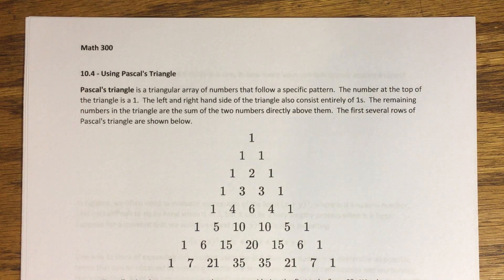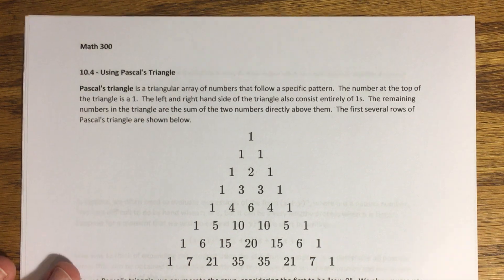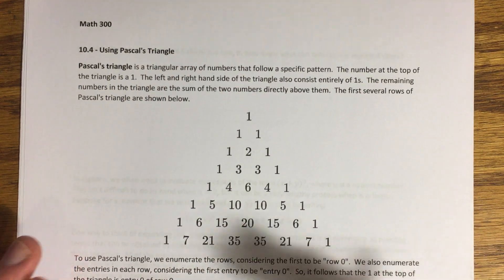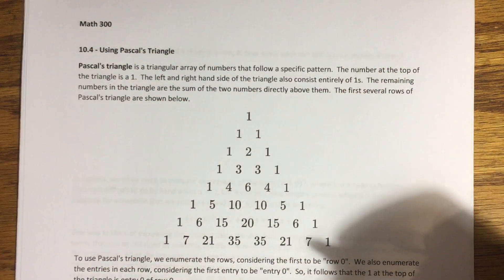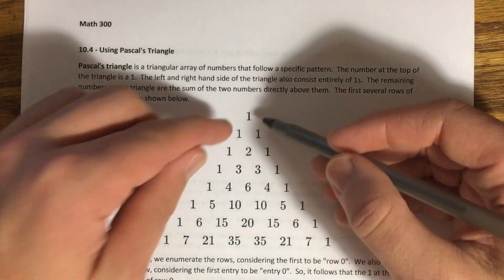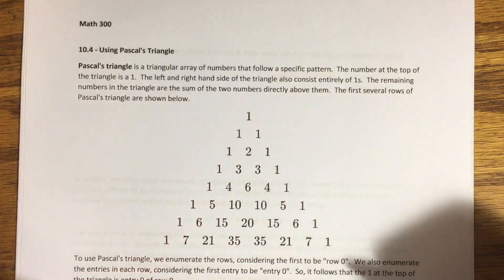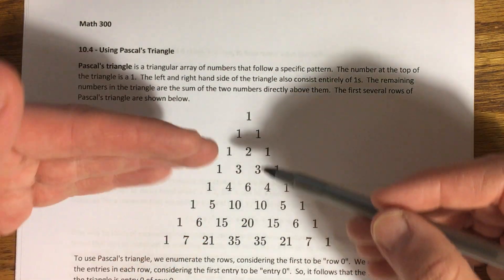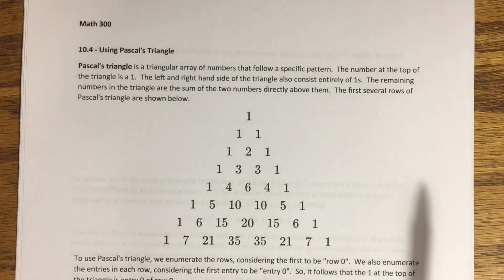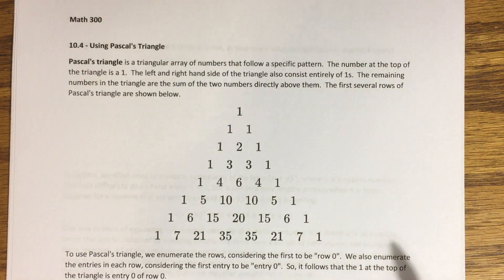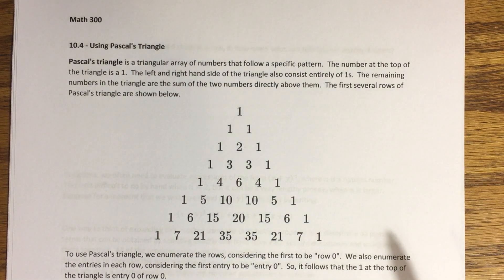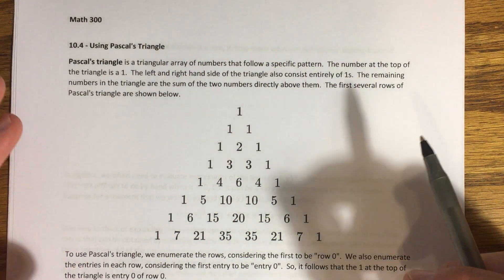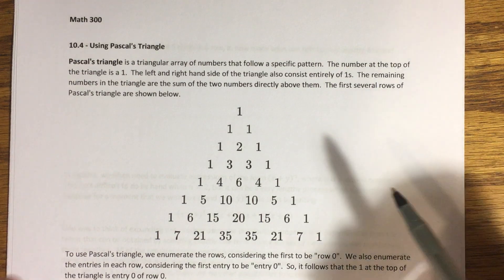Pascal's triangle is a triangular array of numbers. What we see are the first several rows of it here. The triangle actually goes on forever — it's infinite. It just keeps adding rows indefinitely, but obviously you can't write infinitely many rows, so we just show the first part of it. Here's how Pascal's triangle is created.